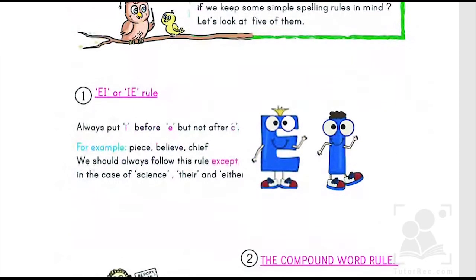First one is EI or IE rule. What happens is when we spell some words, they are so confused in their spellings that we get nervous whether to write IE or EI in spelling. For example,